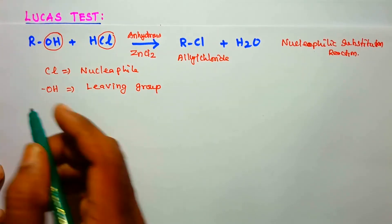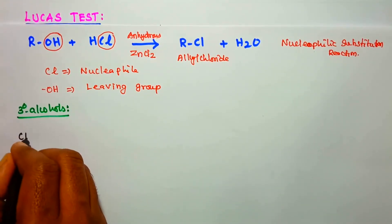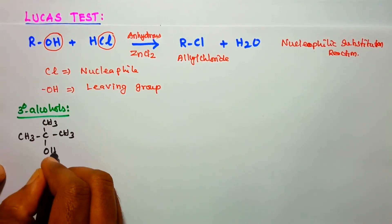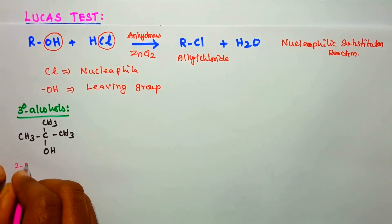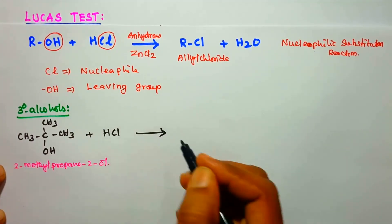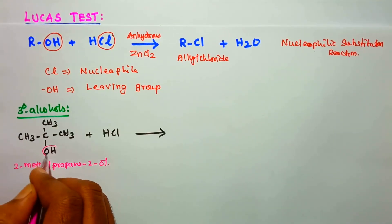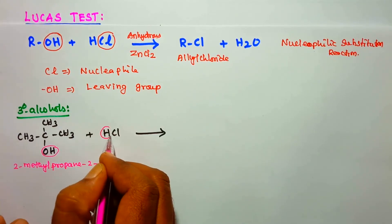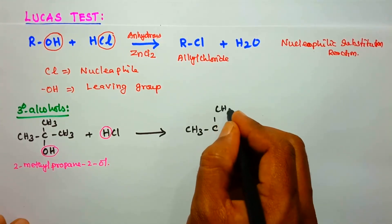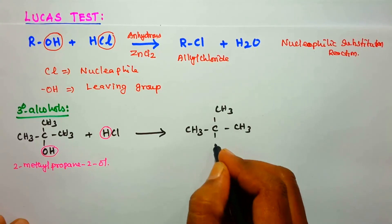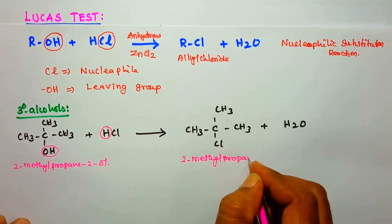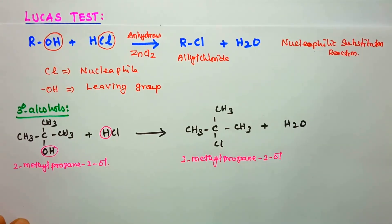For tertiary alcohol: 2-methylpropan-2-ol, (CH3)3C-OH, reacts with concentrated hydrochloric acid in the presence of anhydrous zinc chloride. The OH group is replaced by Cl, and water is eliminated to give (CH3)3C-Cl plus H2O. The product is 2-chloro-2-methylpropane. Turbidity appears immediately for this tertiary alcohol.